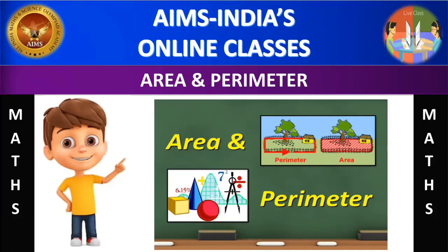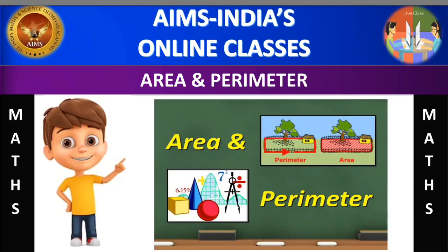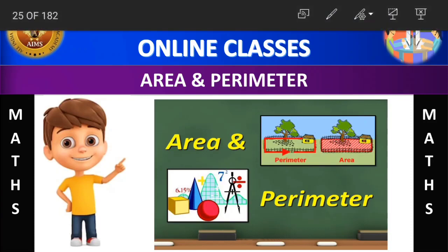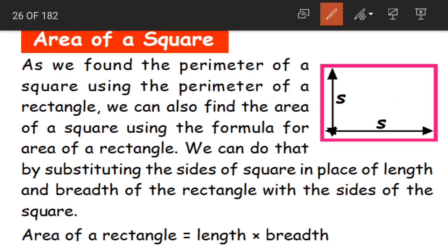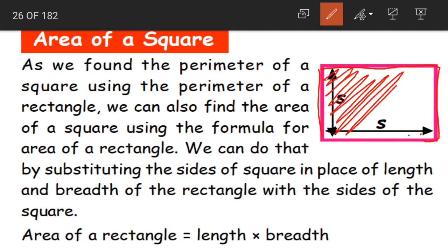Welcome to AIMS India's online classes. In the previous class we learned about area of a rectangle. Area is the space occupied by an object. Suppose if we consider this as a book, this space occupied by the book will be called as the area.